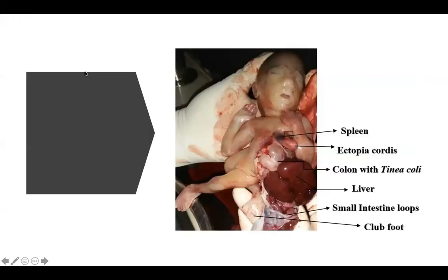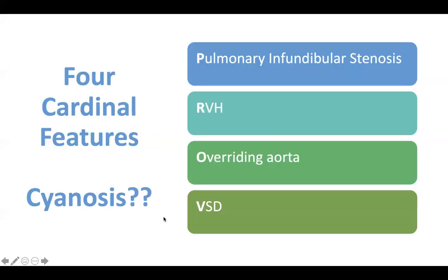Here is a picture showing the multiple manifestations of Pentalogy of Cantrell. Of the four cardinal features of Tetralogy of Fallot, which is responsible for the cyanosis? It is the pulmonary infundibular stenosis — the pulmonary stenosis. Always remember: the degree of pulmonary stenosis will determine the degree of cyanosis.